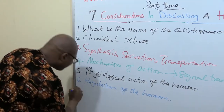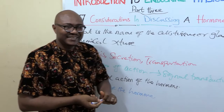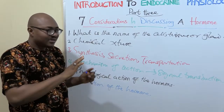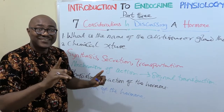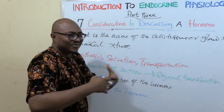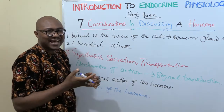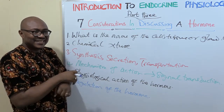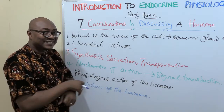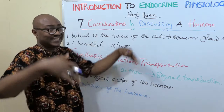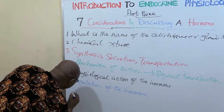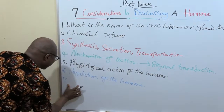Then finally, number seven: in all of these steps there might be a problem, and whenever there's a problem with any of the steps involved, an endocrine disorder happens. We usually group endocrine disorders as overproduction or underproduction — hyper and hypo. You need to know the consequences. For example, if growth hormone is not secreted in the right quantity, it results in dwarfism, especially in a child. If it's over-secreted, it results in gigantism. So you need some knowledge of the disease or disorder that can arise if there's a problem.